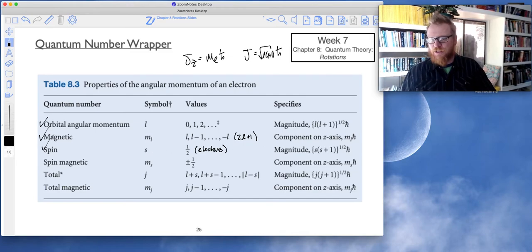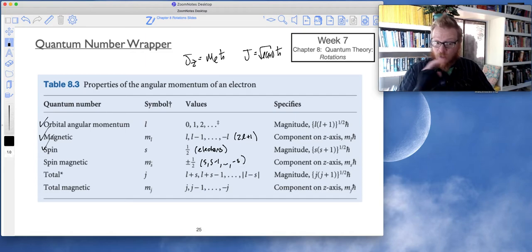Just like l was given, s is the total magnitude which takes on root s times s plus one h bar. And ms, this is showing it takes some values plus minus one half, but ms is technically s, s minus one, all the way down to minus s. So ml and ms are like twins. Also, ms gives us the component on the z axis of angular momentum, ms h bar.